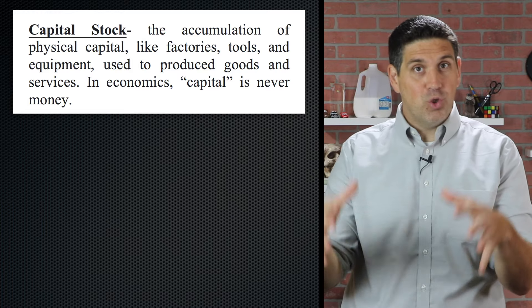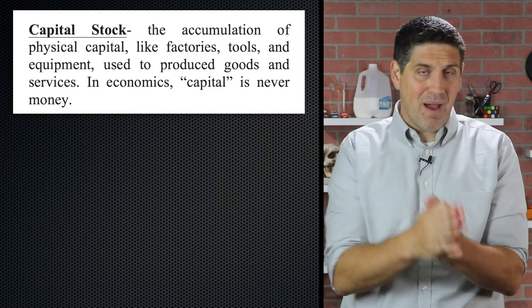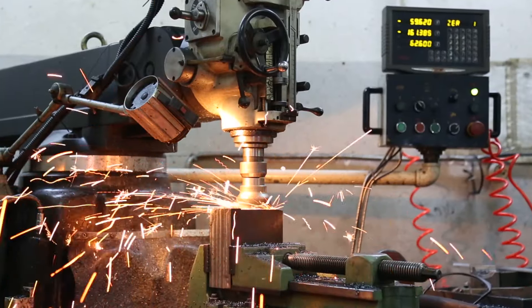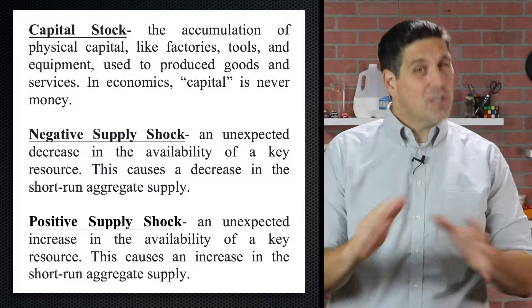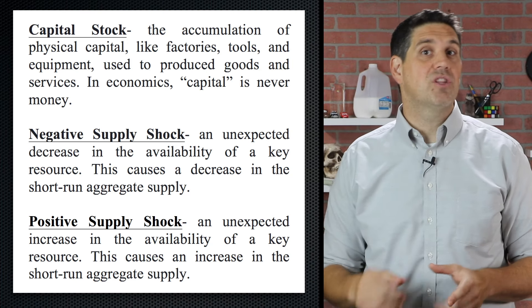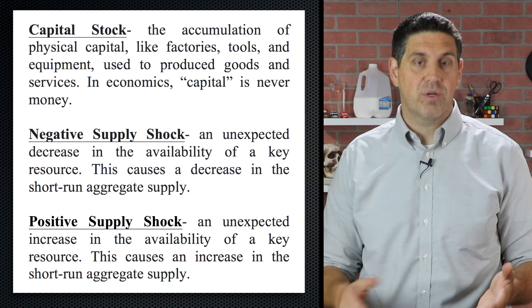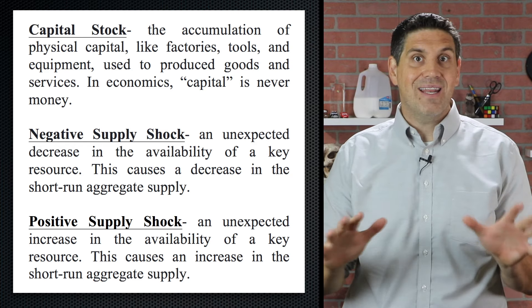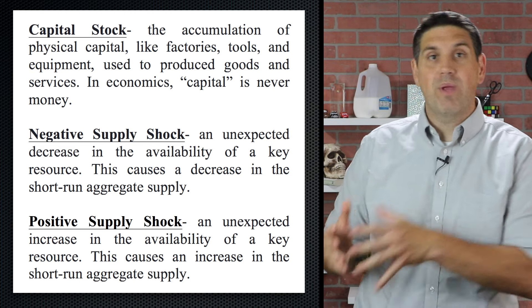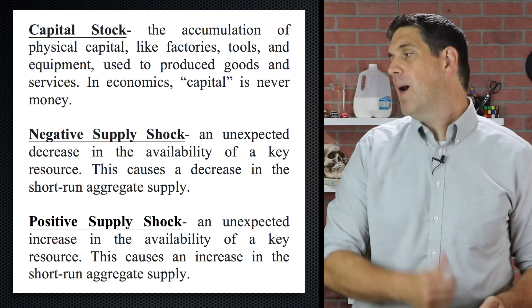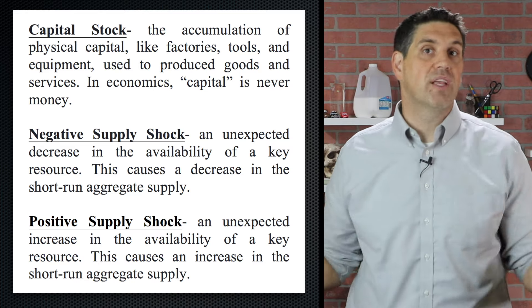There are a few terms your teacher or professor might use in class or on a test. The first is capital stock. Remember that physical capital is tools, machines, and factories — it's never money. Capital stock refers to the amount of factories and tools we have in the economy. You'll also hear about supply shock: an unexpected change in the price or availability of a key resource like electricity, oil, or steel. A negative supply shock means we have less resources and can't produce as much. A positive supply shock means we produce more because we have new resources.